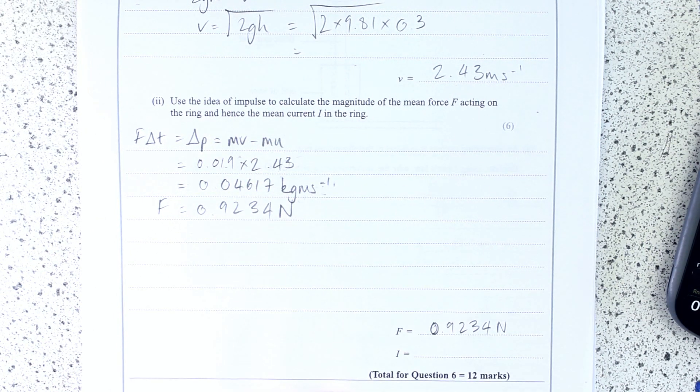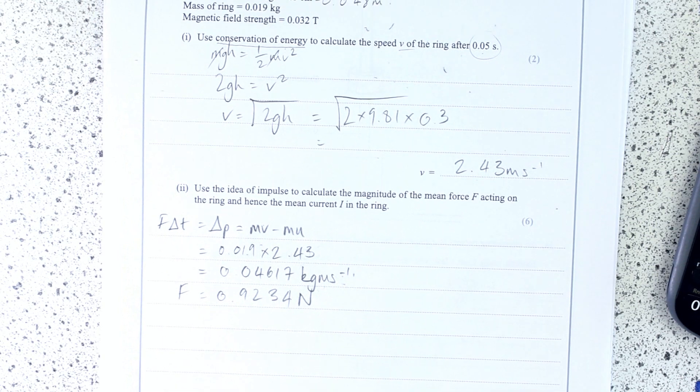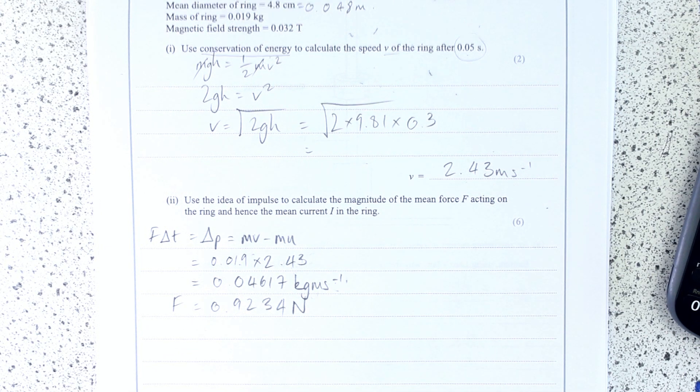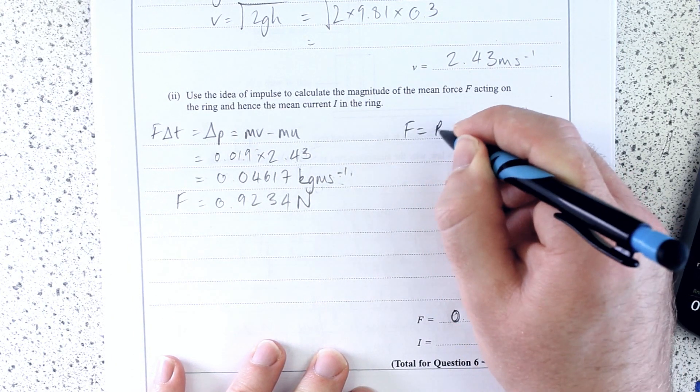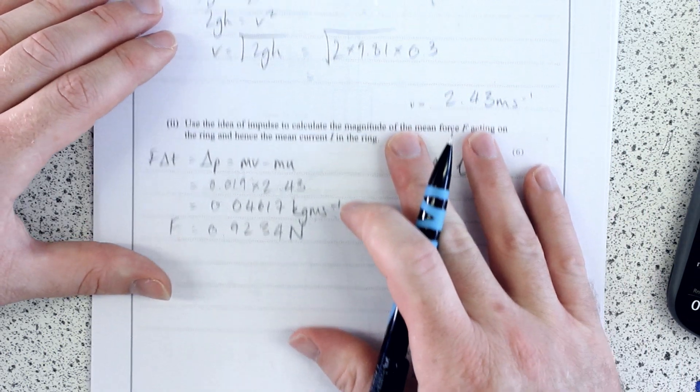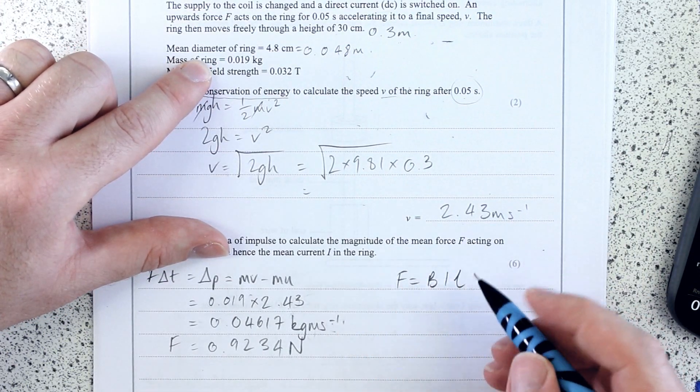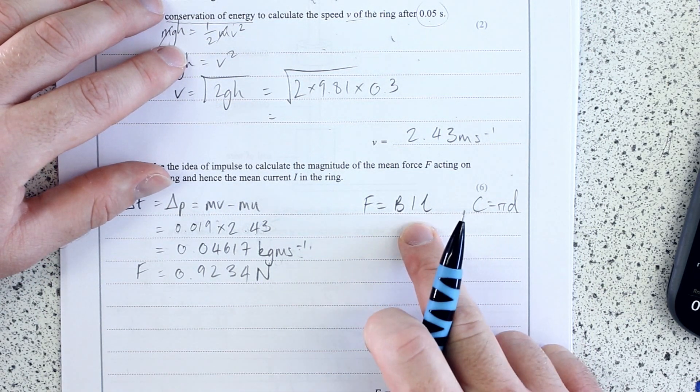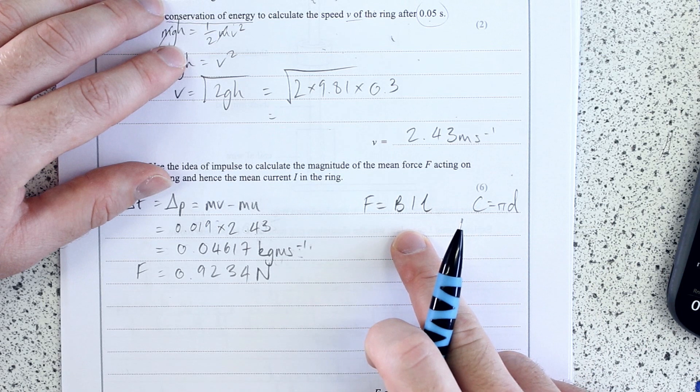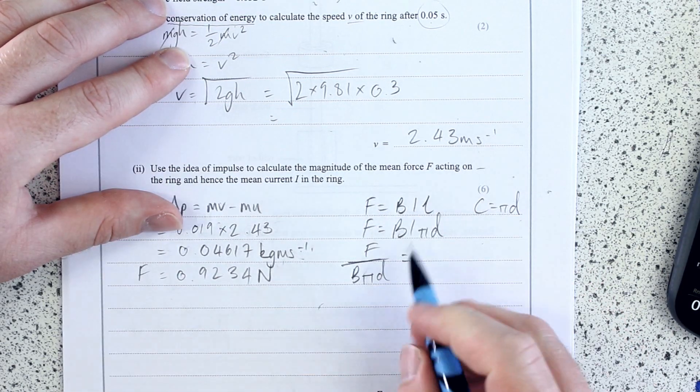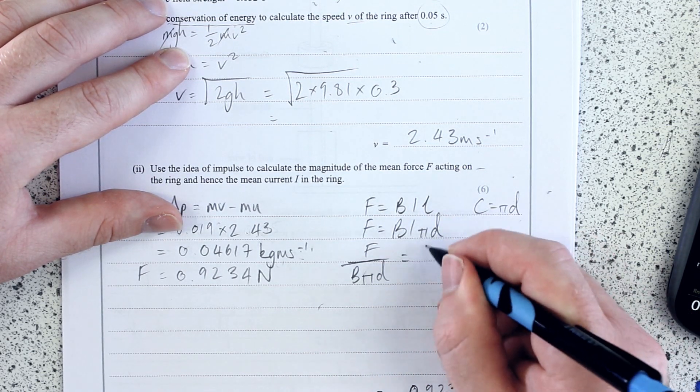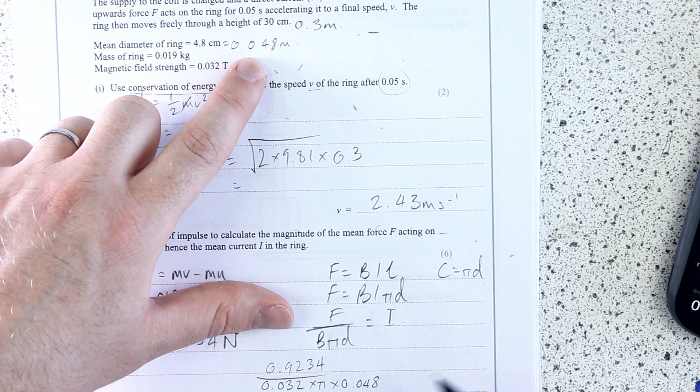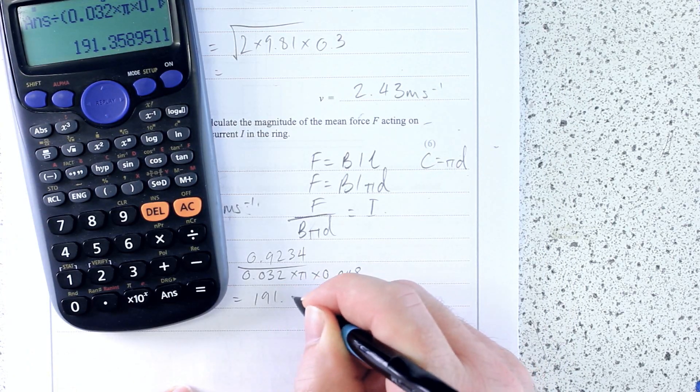And hence the mean current I in the ring. Well, let's have a little think through what have we got to be able to equate to that. We know it's an electromagnetic force. And an electromagnetic force is a magnetic field strength times a current times a length. I don't have a length, do I, but I do have a diameter. And a circumference is pi d. So I can just stick that in here instead of length. And I want to finally work out the current, don't I? So I can just do a bit of rearranging. So now I can just insert my numbers. That's going to give me current 0.9234 over... 191.4 amps.